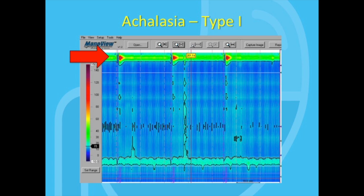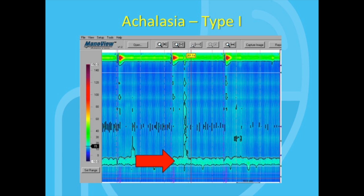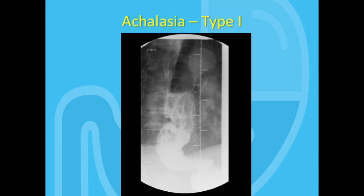This slide shows type 1 achalasia. You can see the normal upper esophageal sphincter at the top. The LES is the continuous band of pressure at the bottom of the screen. There is no relaxation of the LES with swallows, and that is why you do not see an interruption in that band. In between them is the esophageal body, and there is no pressure there whatsoever, because type 1 achalasia is essentially associated with a dilated sigmoid esophagus, and there is no pressurization.